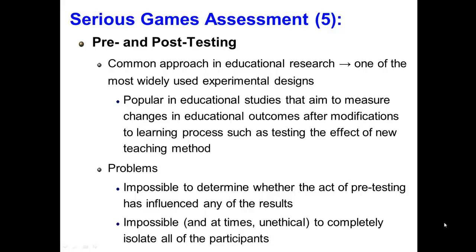Despite the widespread use of pre- and post-testing, there are a number of problems associated with it. Most importantly, it is impossible to determine whether the act of pre-testing influences any of the results. Furthermore, it is impossible and at times unethical to completely isolate all of the participants. For example, if two groups of child participants attend the same school, they will most likely interact outside of lessons, potentially influencing the results, while if the child participants are taken from different schools to prevent this, randomization is not possible.